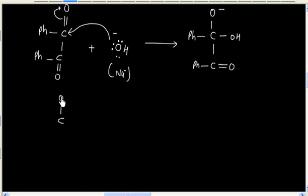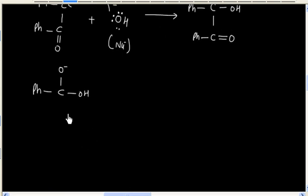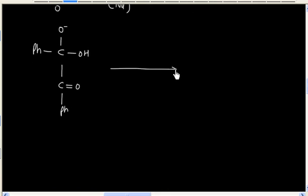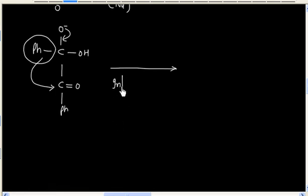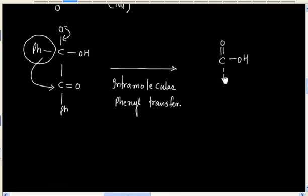Now in the next step, we will have phenyl transfer. So phenyl group with a bond pair of electrons get transferred to another carbonyl carbon. This is basically intramolecular. So we have intramolecular phenyl transfer.